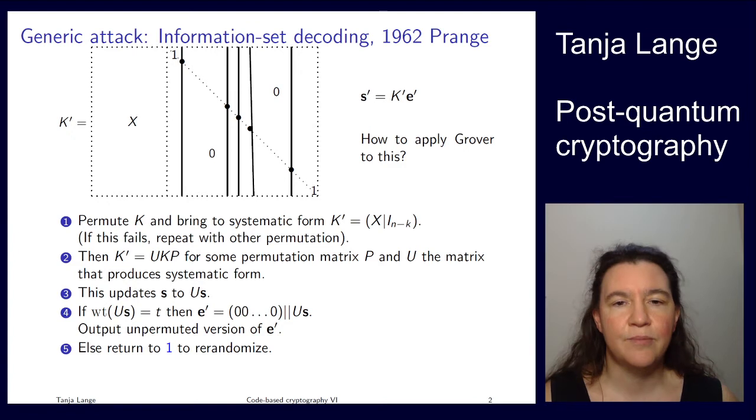Then we do Gaussian elimination over there to get an identity matrix. If that fails, we go back to picking another permutation. And if it doesn't fail, then we continue. We have now implicitly applied two matrices, u and p, where p is this permutation matrix, which was this initial selection, and then u that produces the systematic form.